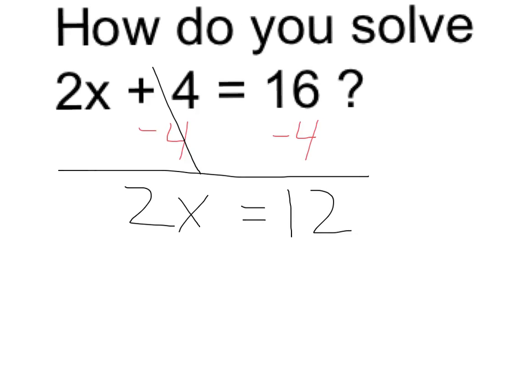Now, in order to get the x completely alone, I need to get rid of the 2. The way I undo a 2 times x is going to be to divide by 2.